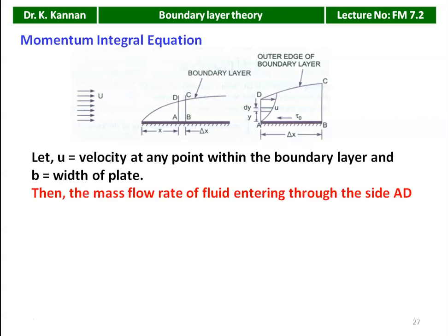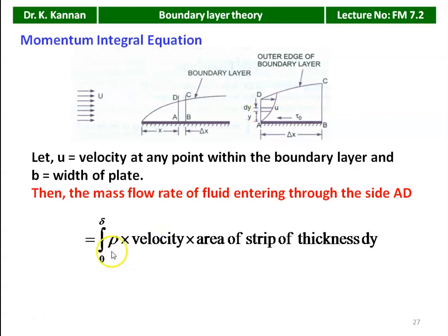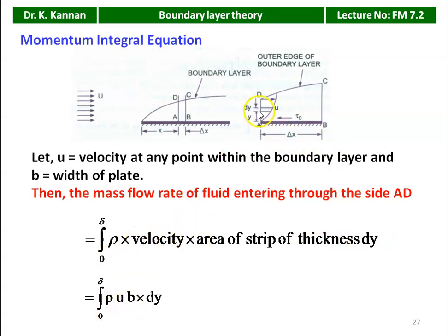The mass flow rate of fluid entering through side AD, from the continuity equation, is: ṁ = ∫₀^δ ρ·u·b·dy, where ρ is the density, u is the velocity at that point, and b·dy is the area of the strip (b is the width perpendicular to the screen).